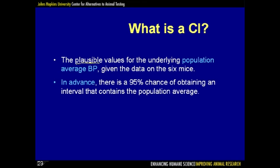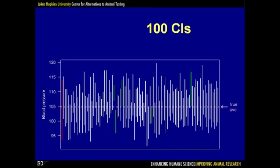Here is a set of 100 possible confidence intervals. The one on the far left, in red, is our confidence interval calculated with our particular six mice. But we might have obtained a different set of six mice, leading to a different confidence interval. Most of these 100 intervals contain the true population average, but about 5% of them, shown in green, do not contain the true average. We only see one sample and one confidence interval, and we won't know whether our interval contains the true average or not.